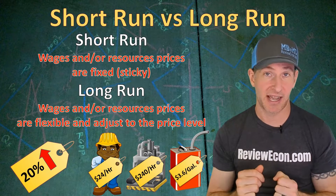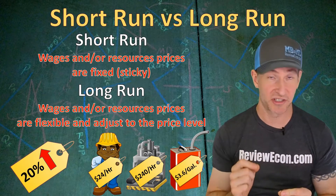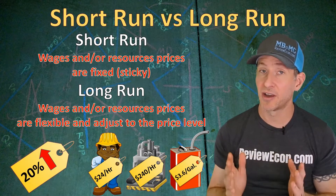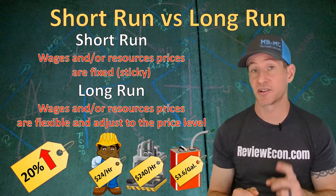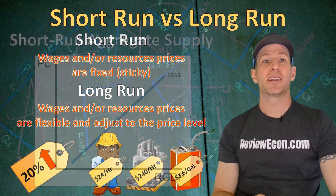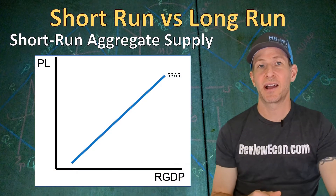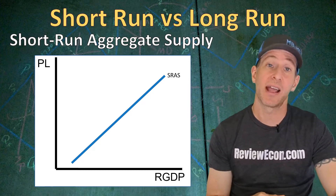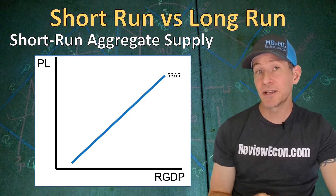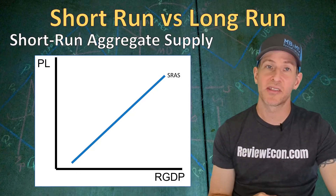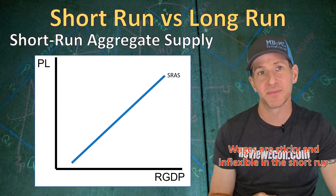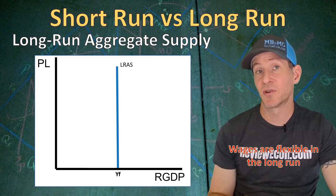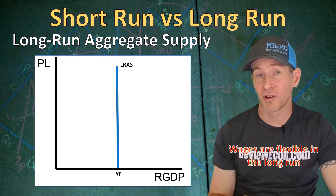So we aren't talking about a specific amount of time — we're talking about what has changed. In the short-run, wages and other resource prices are sticky and inflexible, but in the long-run, wages and other resource prices are flexible and they adjust to the price level. When you graph out the short-run aggregate supply curve, we get an upward sloping curve that shows the direct relationship between the price level and the amount of real GDP output. But in the long-run, because wages and other resource prices are flexible, we get a vertical long-run aggregate supply curve.